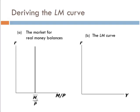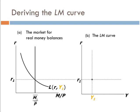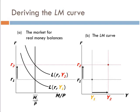We have our first money supply function at an income level of Y1, and at that income level we have our money demand function. That gives us an interest rate, so we're in equilibrium at the combination of real interest rate R1 and output level Y1. Now let's increase income and see what happens. Real balances are a normal good, so demand is going to increase and shift to the right, giving us a higher interest rate. The new equilibrium is real interest rate R2 and income Y2.